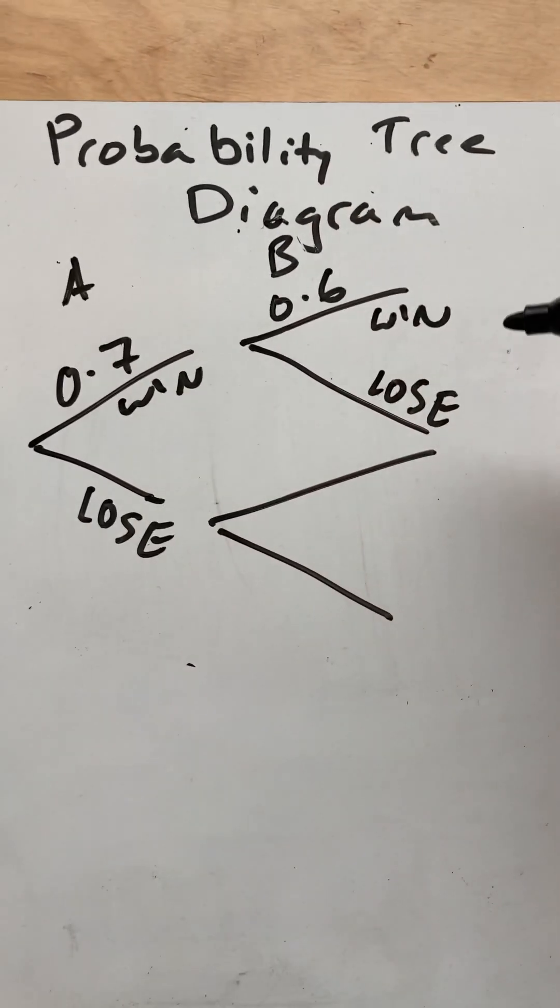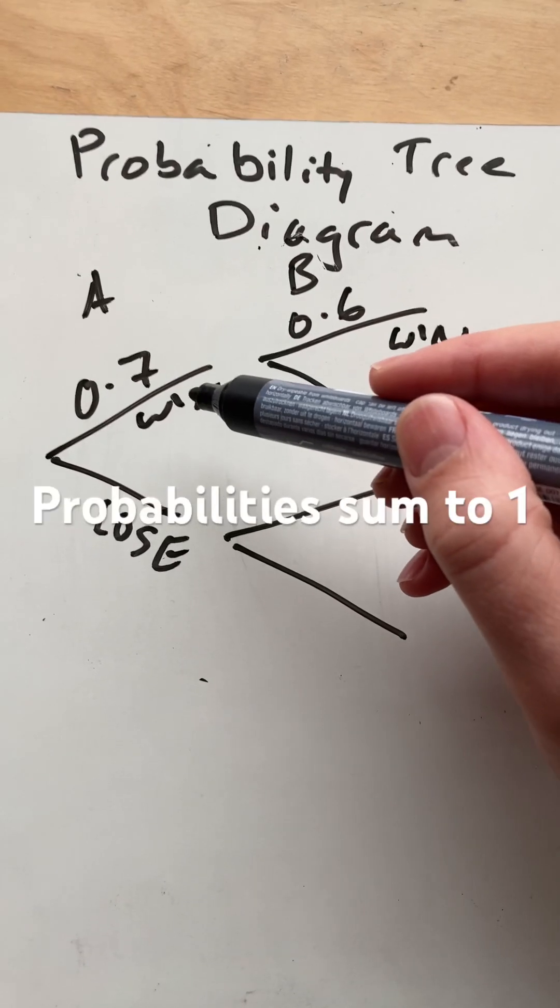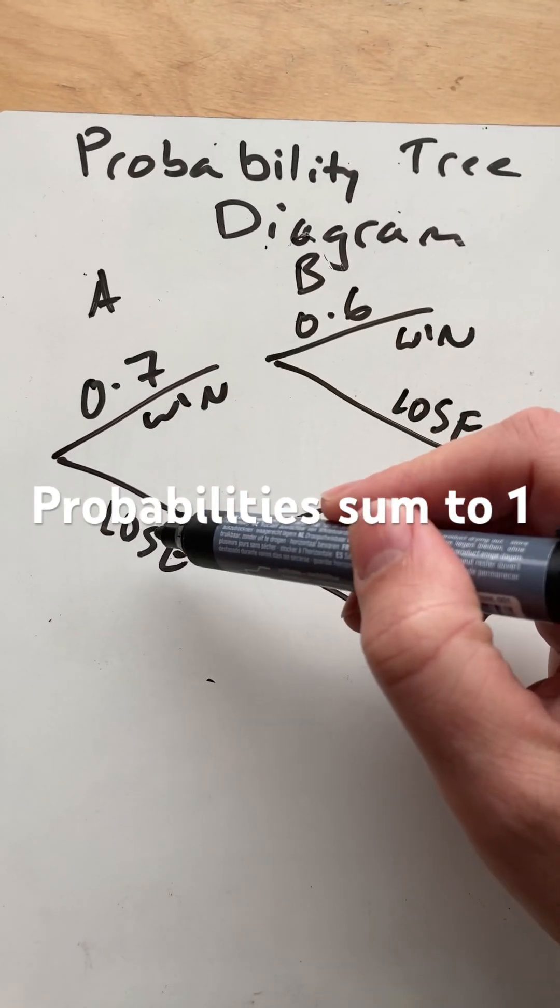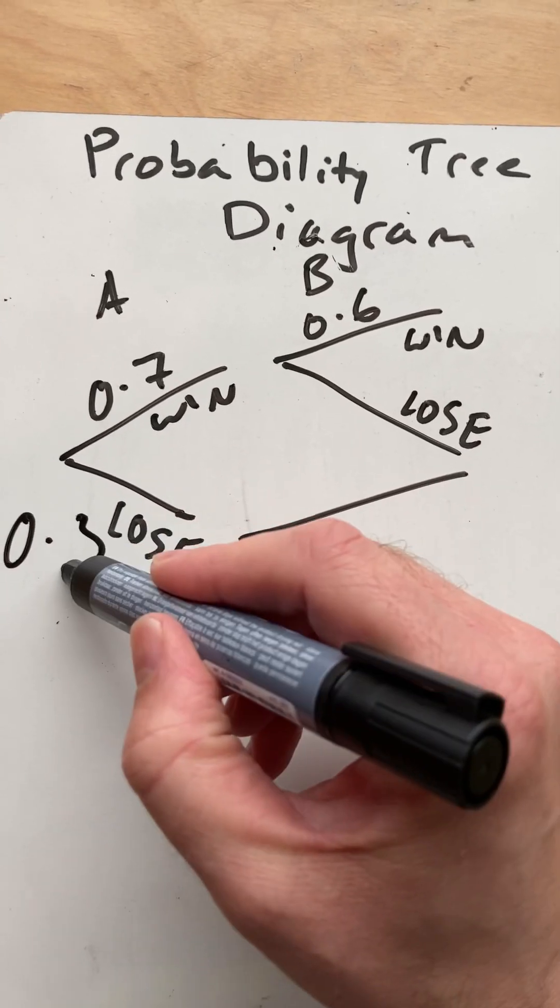Maybe they're playing tennis and playing squash. If we have the probability of winning in the first event of 0.7, well, the probability of losing, if there's no drawing, must then be 0.3.